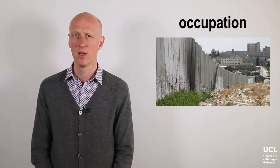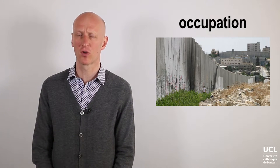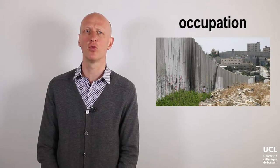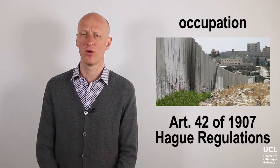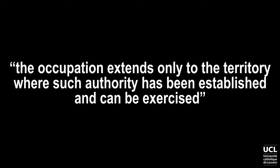It is not an easy task to determine when a situation is a legal occupation under IHL. The only conventional text that provides the definition of this concept can be found in Article 42 of the Hague Regulations of 1907. According to this text, a territory is considered occupied when it is actually placed under the authority of the hostile army. The occupation extends only to the territory where such authority has been established and can be exercised.